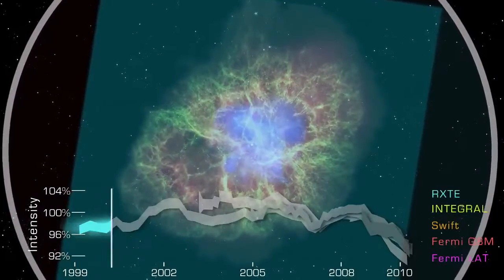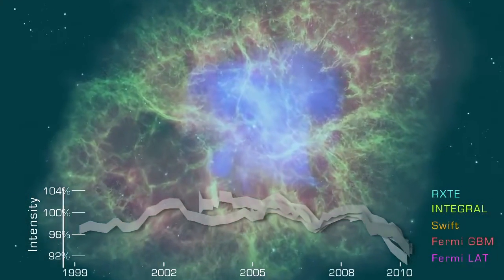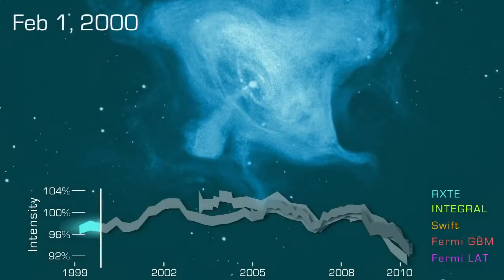What's going on? Scientists think the X-rays reveal processes deep within the nebula, in a region powered by a rapidly spinning neutron star, the core of the star that blew up.